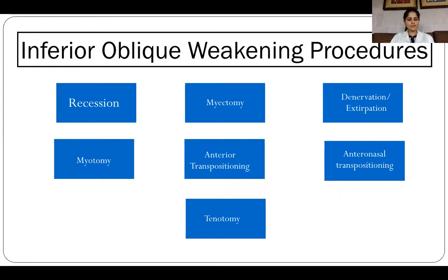Various surgical procedures have been described to weaken the inferior oblique, and these include recession, tenotomy, myotomy, myectomy, denervation, extirpation, anterotransposition, anteronasal transposition, and graded anterotransposition. Grade 1 does not require any weakening procedure. Grade 2 and 3 can be corrected by recession, while grade 4 requires anterotransposition, and if severe extortion is present, then anteronasal transposition is the procedure of choice.